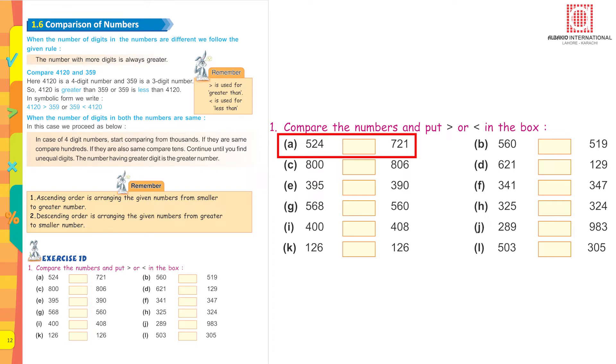560 is lesser or greater than 519? Now compare hundreds with 100, it's the same: 500, 500. Here it is 519, so look for tens. Then 6 tens here, it is 1 ten. So 6 tens is greater than 1 ten. That is why 560 is greater than 519.